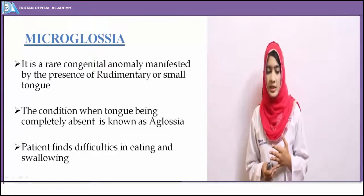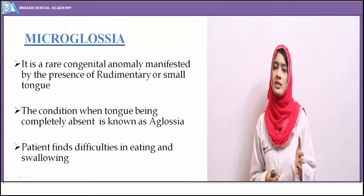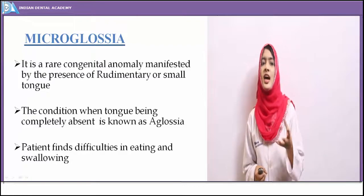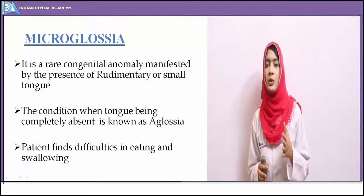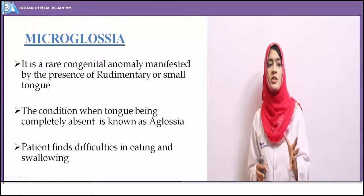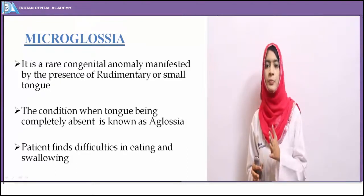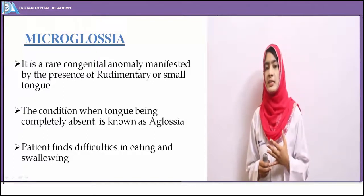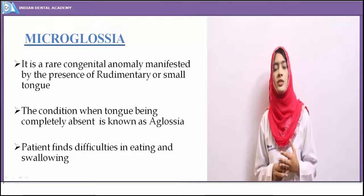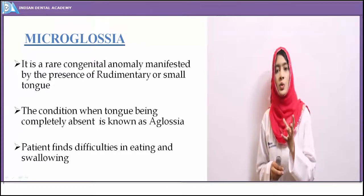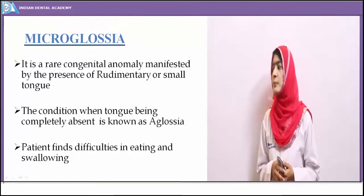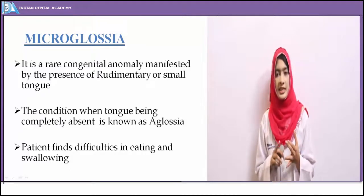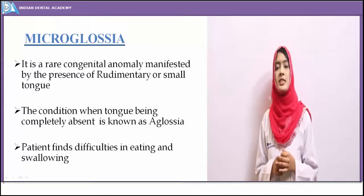Microglossia means small-sized tongue. There is also a condition called aglossia — absence of tongue — which is extremely rare. Aglossia or absence of tongue is essentially a form of microglossia; microglossia with extreme glossoptosis gives a picture of aglossia. Microglossia is seen in association with certain syndromes. The tongue present in the oral cavity is very small and is also known as a rudimentary tongue. Patients will have obvious difficulties in speech, eating, and swallowing.